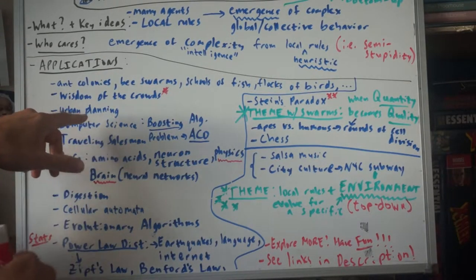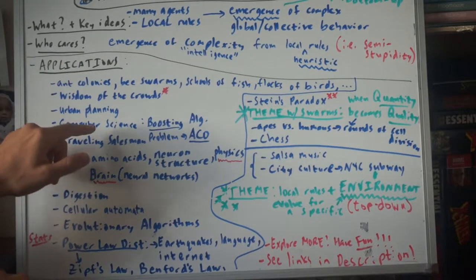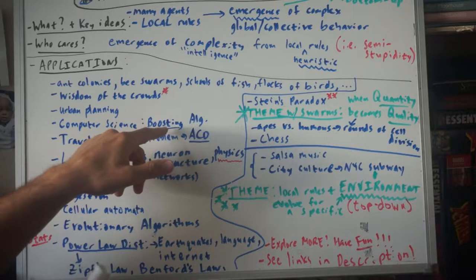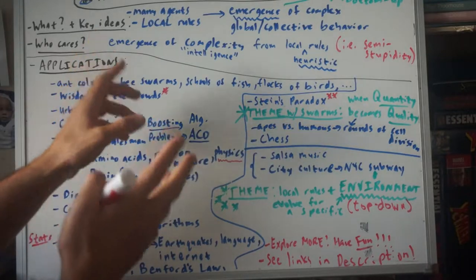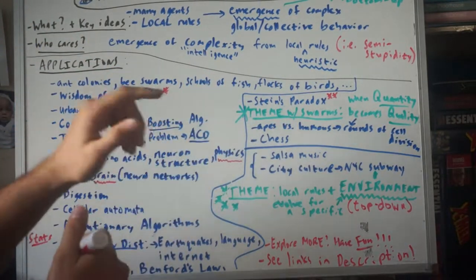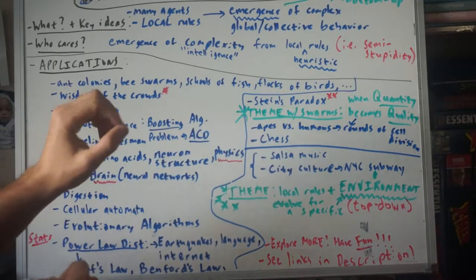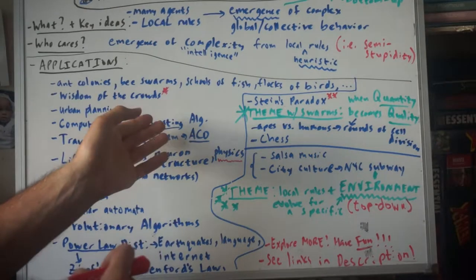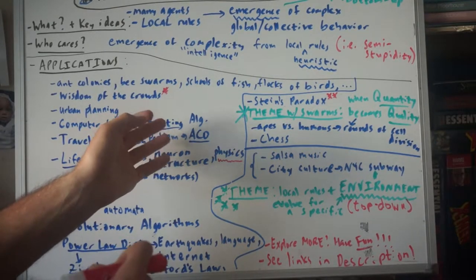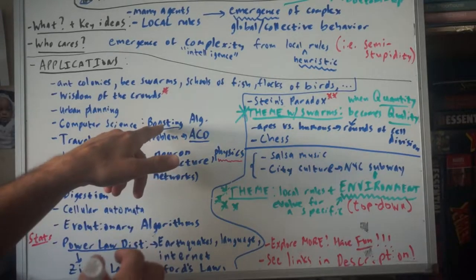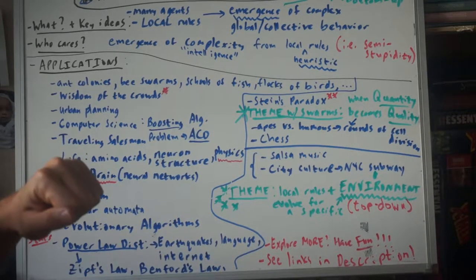Urban planning, city design. So I'll just say that, I'll leave it at that. Computer science, there's something called the boosting algorithm, and actually one of my professors in college, I think he's one of the co-inventors or the inventor of this. And what this is, is it follows a lot of very simple rules, and each of those rules is not very good at solving the problem. But when you combine them, they can solve some very complicated problems.